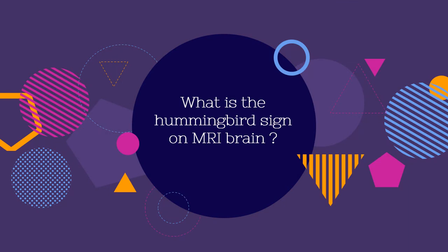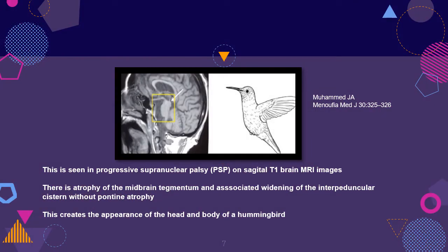What is the hummingbird sign on MRI brain? This is seen in progressive supranuclear palsy on sagittal T1 brain MRI images. There is atrophy of the midbrain tegmentum and associated widening of the interpeduncular cistern without pontine atrophy. This creates the appearance of the head and body of a hummingbird.